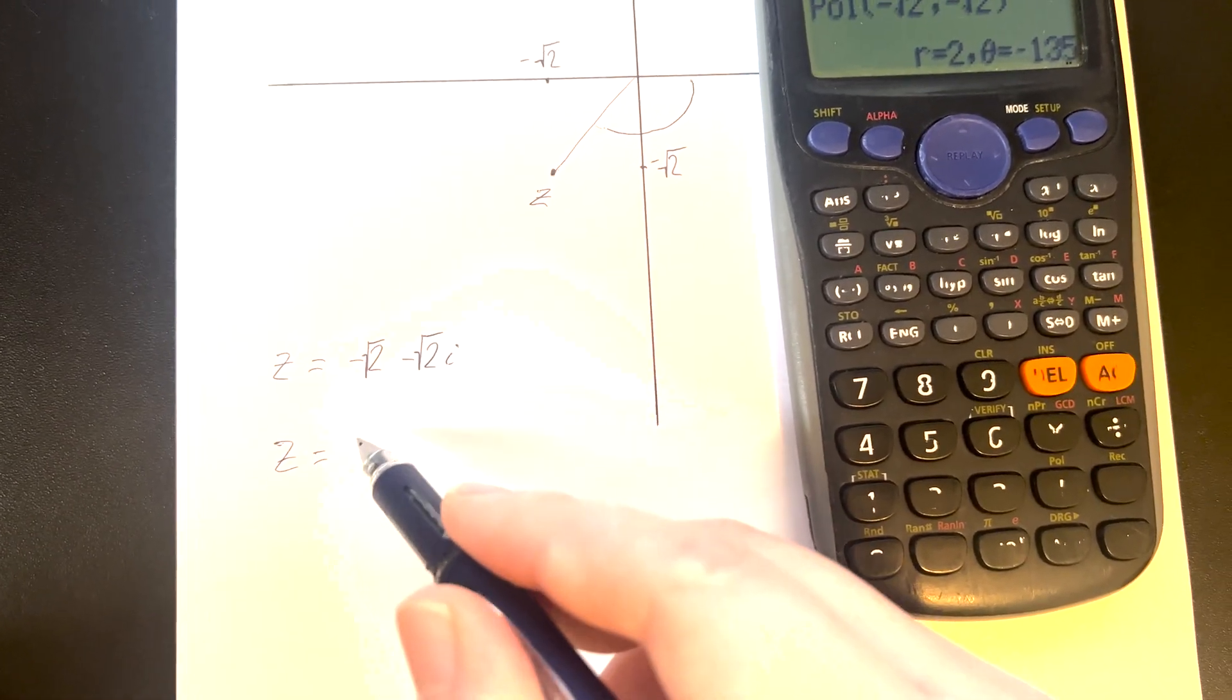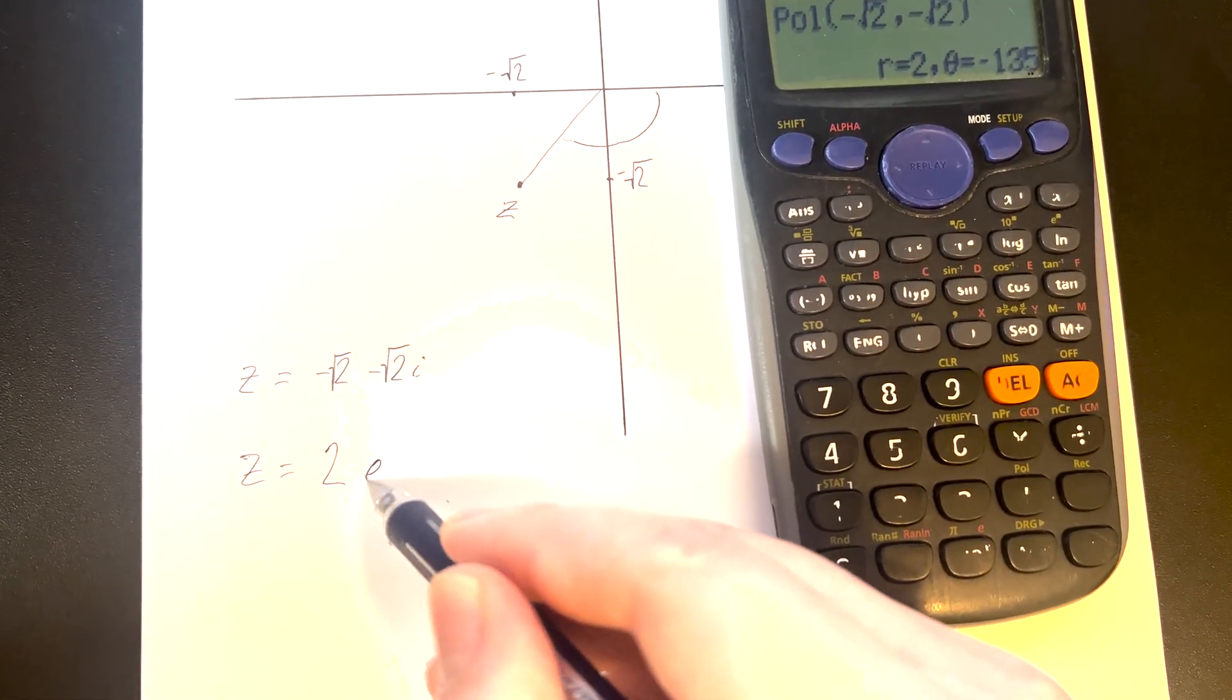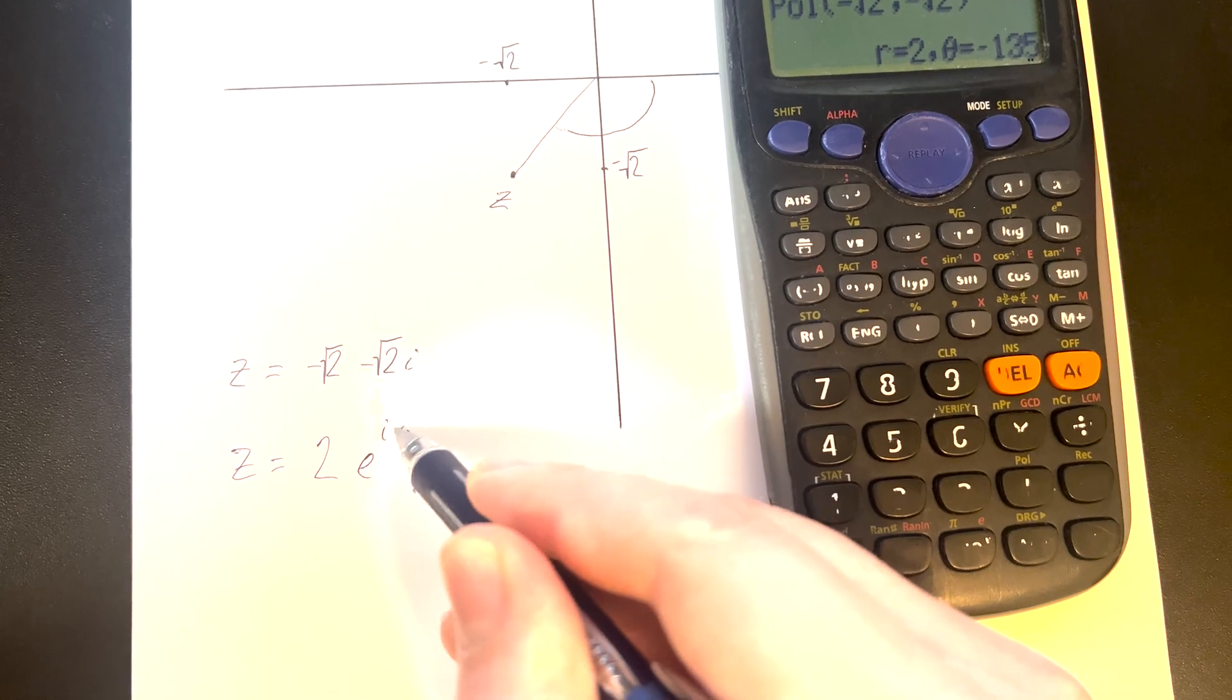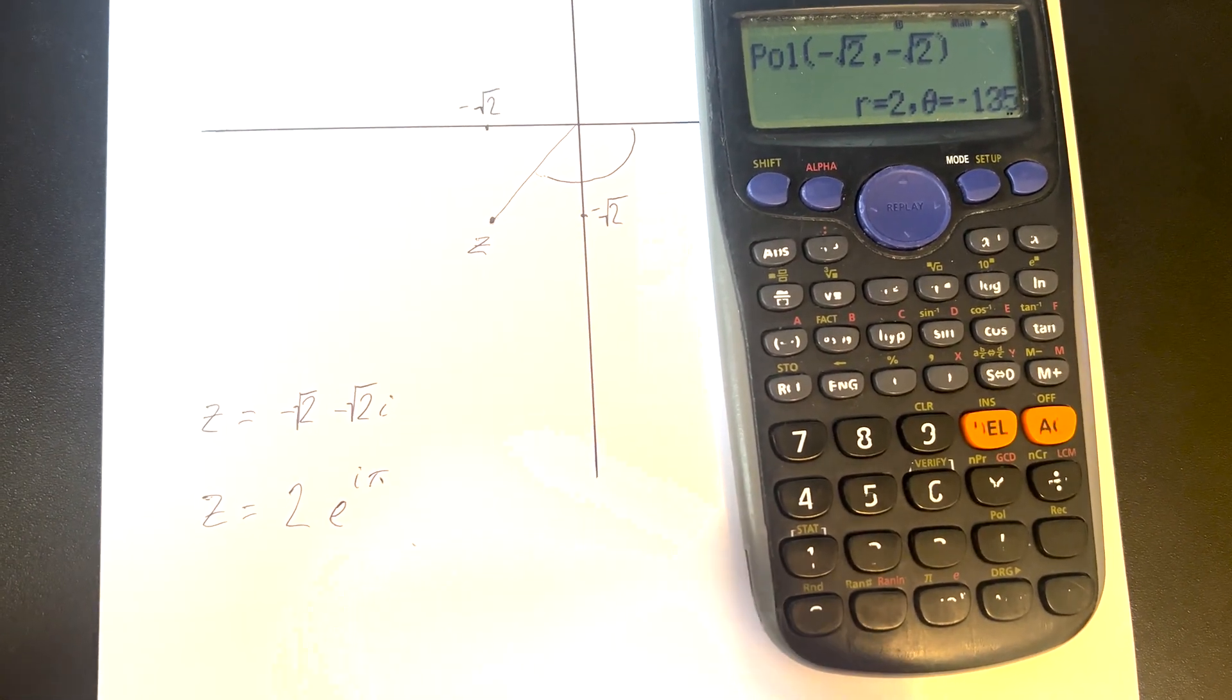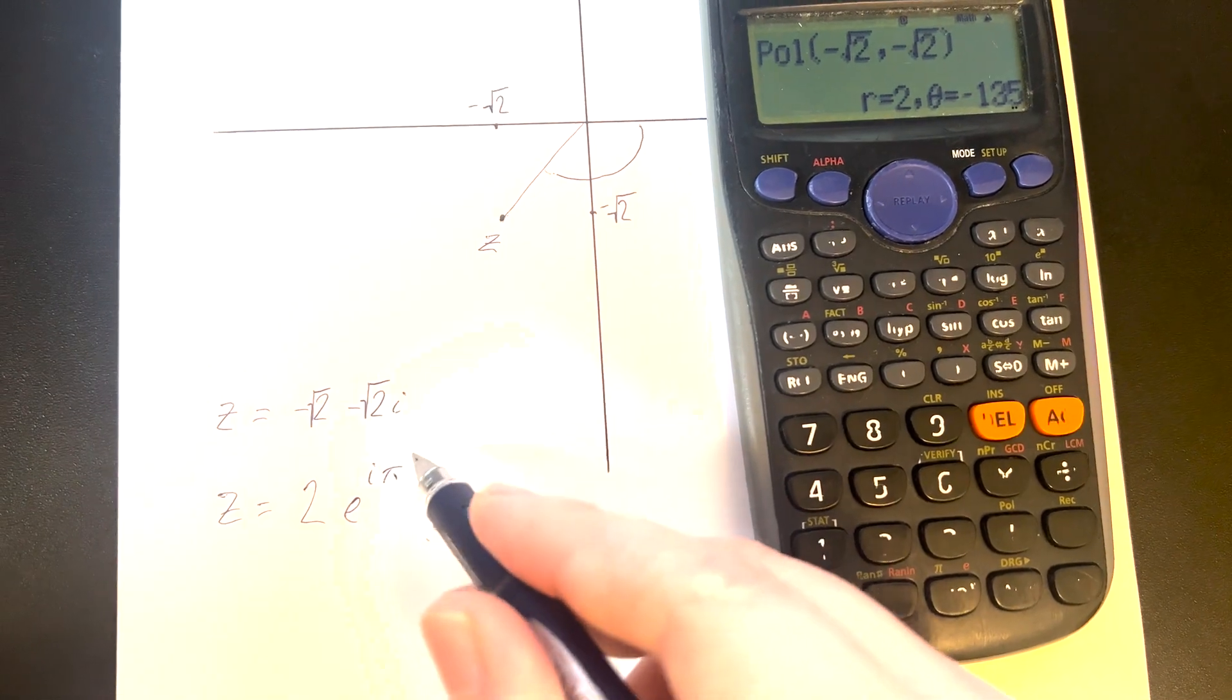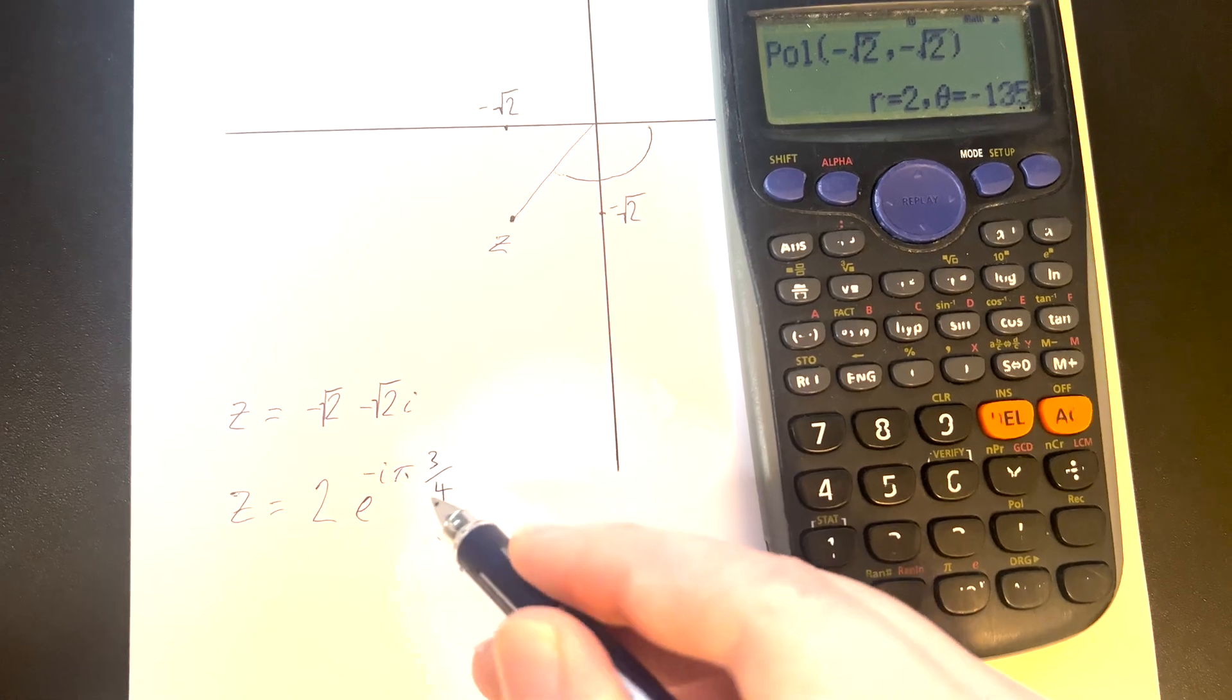To do that, all we need to do is write z equals. We start with the modulus, 2, then e. We'll start with iπ, and now minus 135 over 180. That's going to give us, putting the minus out the front, 3 quarters.